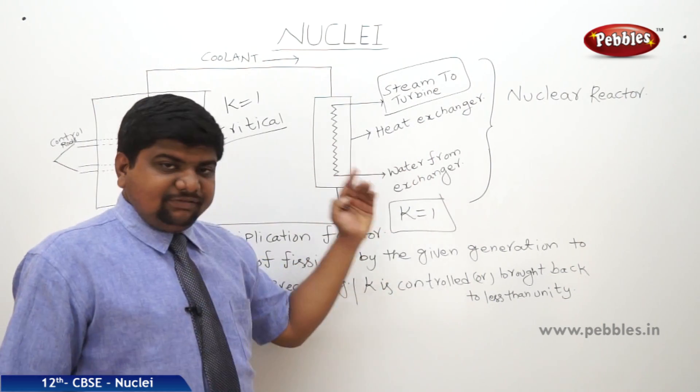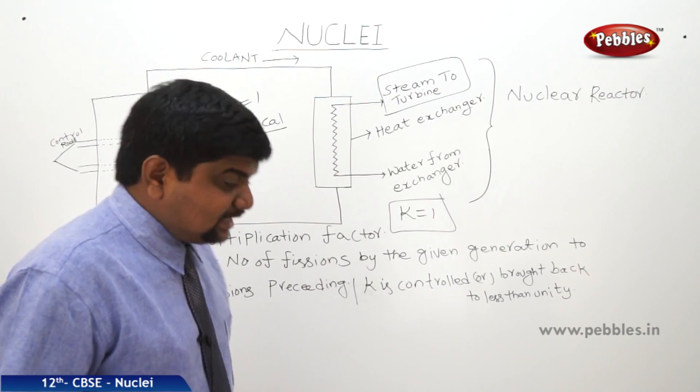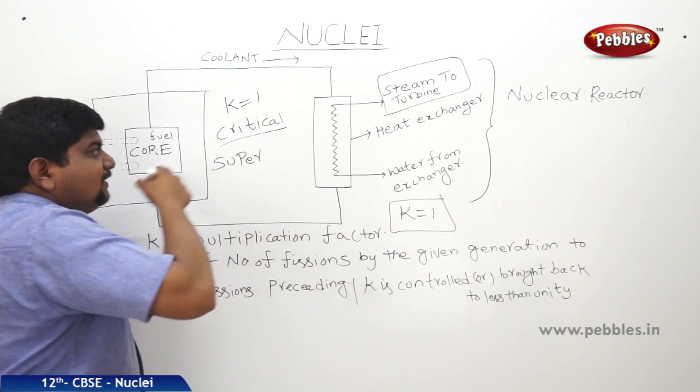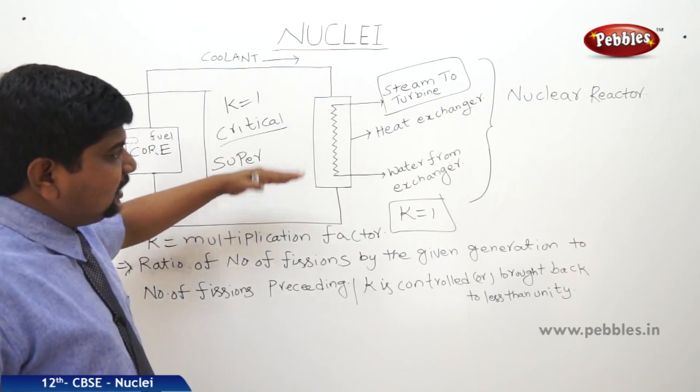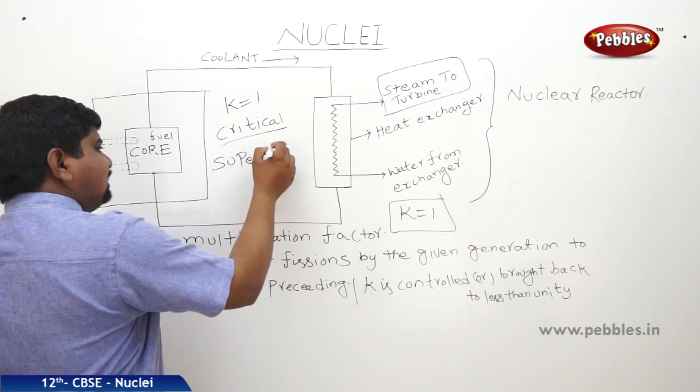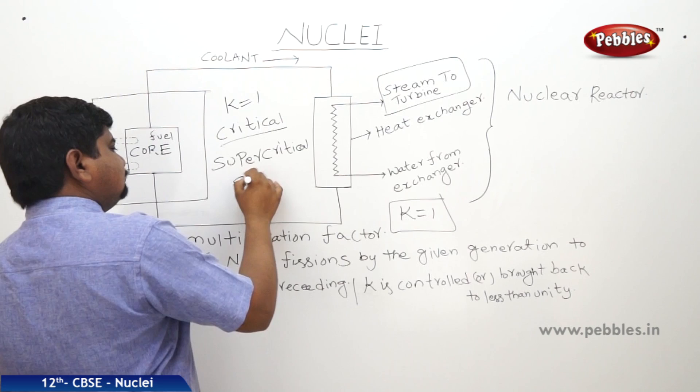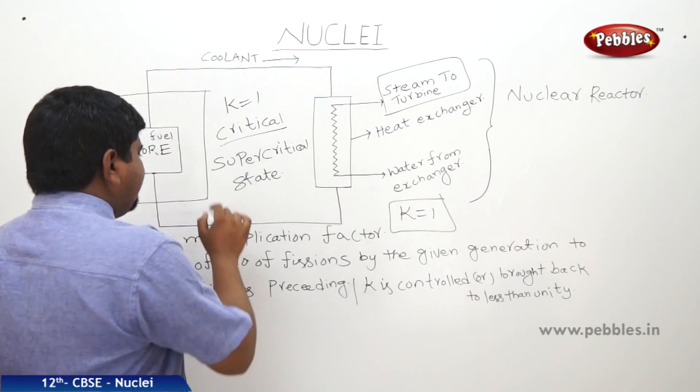Until and unless this K value is brought back to less than unity, then it will be super critical. Because if the critical state continues for a long time, this nuclear reactor will shift to the super critical state, which causes explosion.